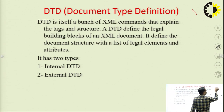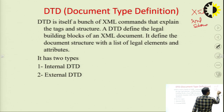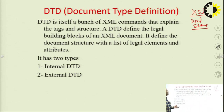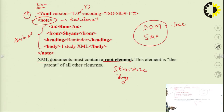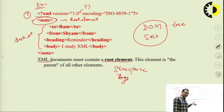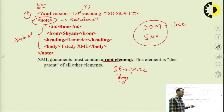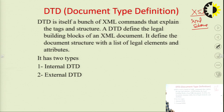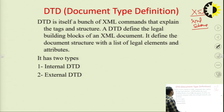For XML validation, we use DTD — Document Type Definition. DTD is used when we need to describe the structure of an XML document: what is the root element, what are the child elements, their values, and their attributes.